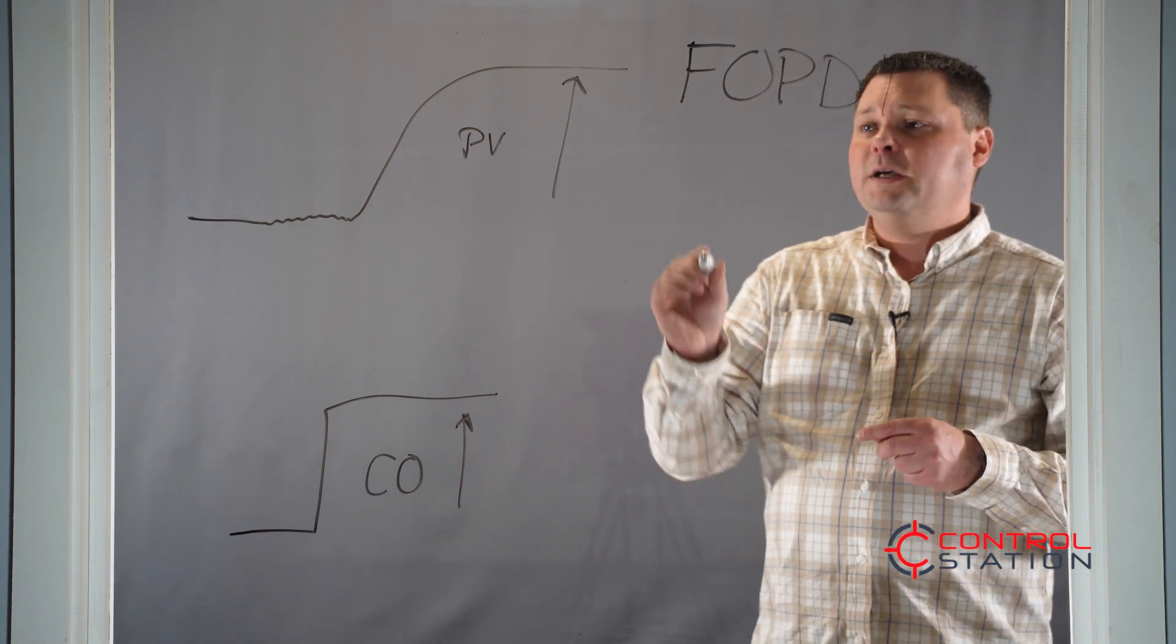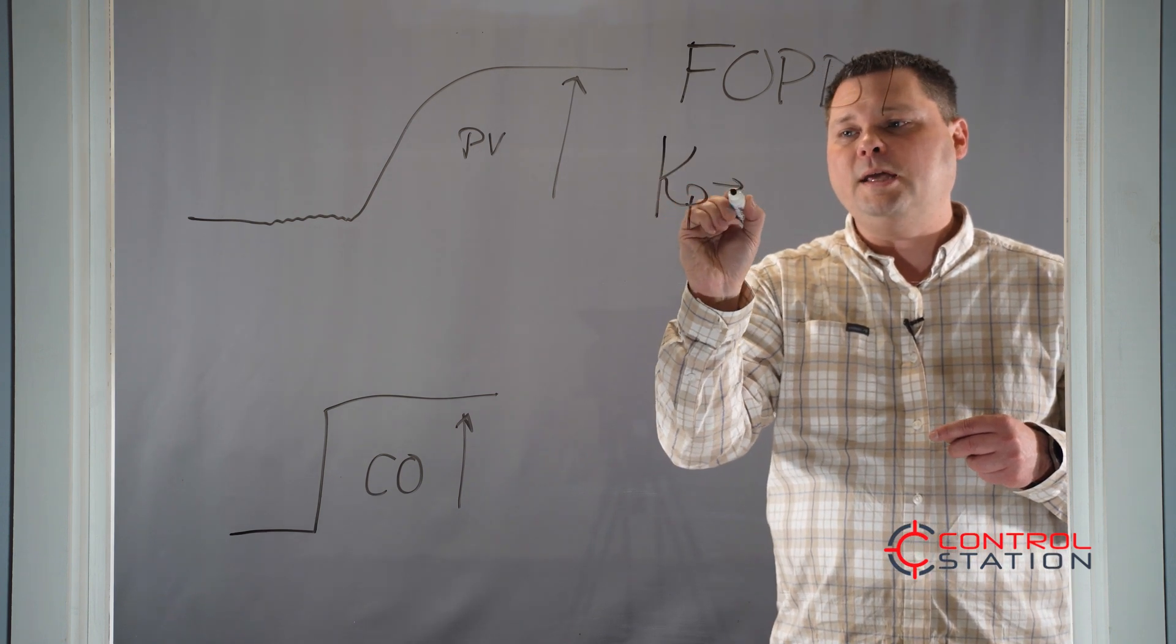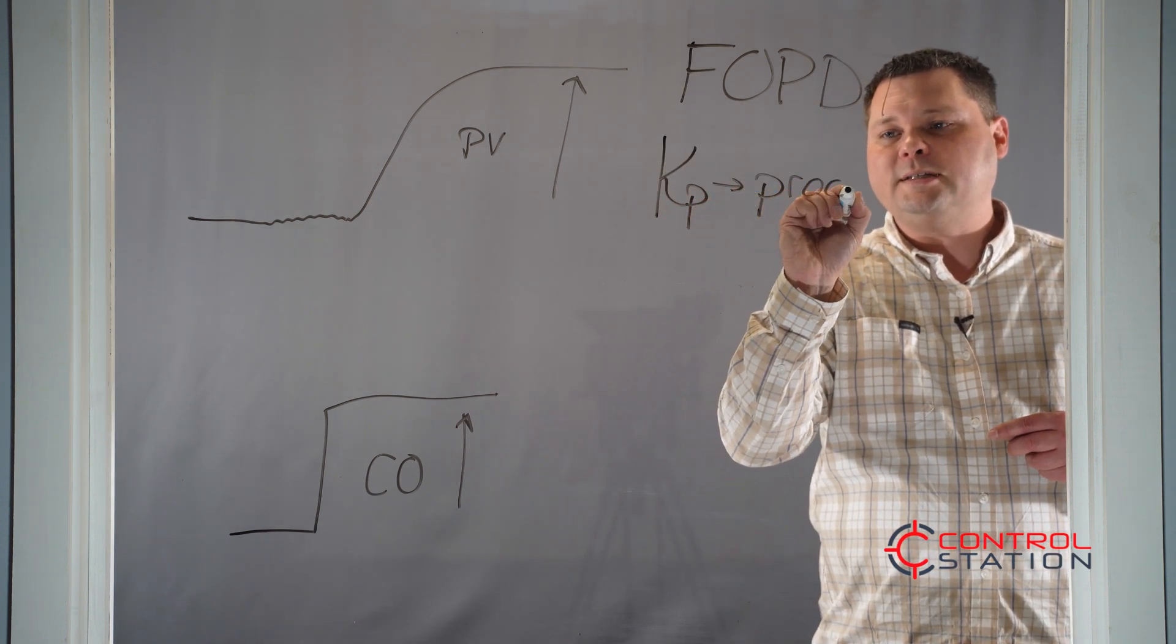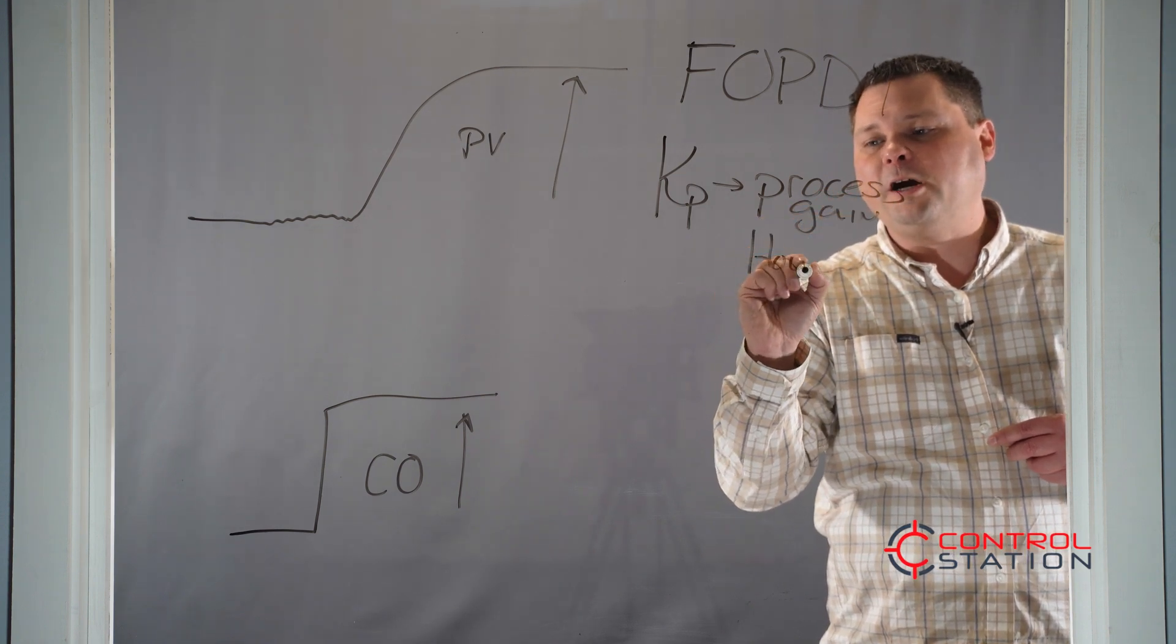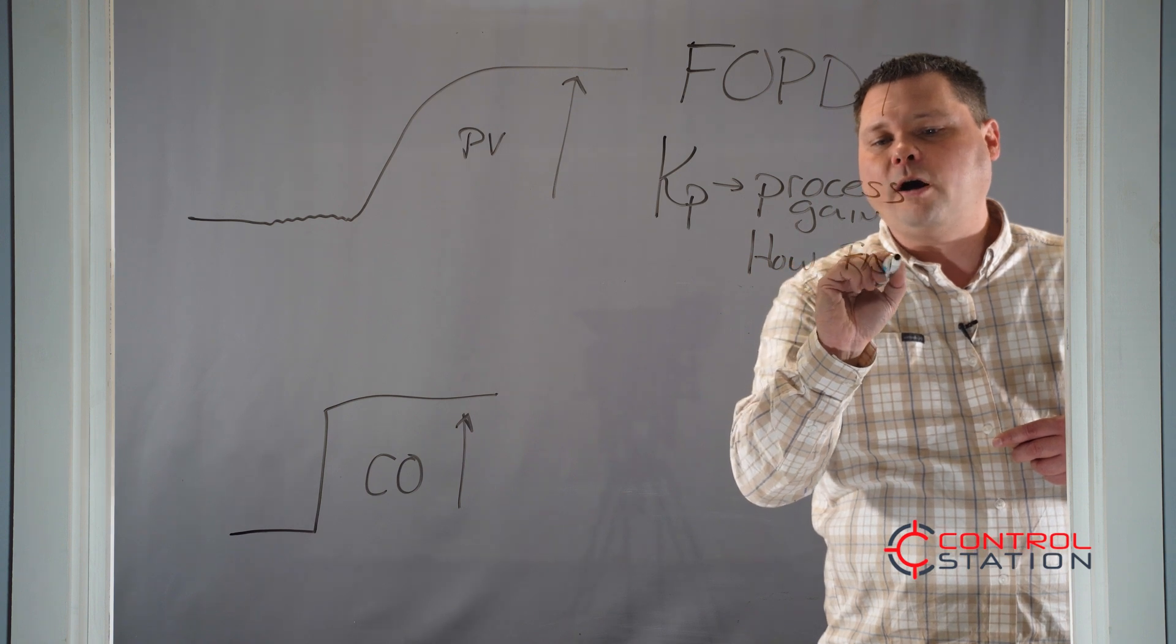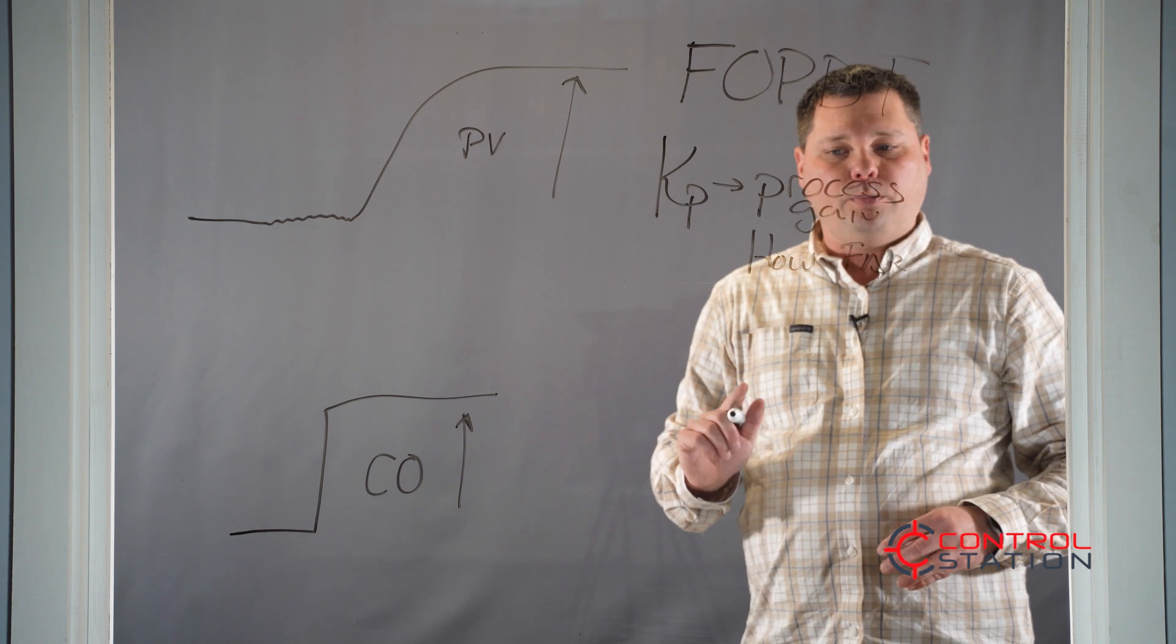This model is going to tell us our process gain, which we call KP, which is our process gain. It's going to be the how far variable. How far does the process variable move when we manipulate the output?